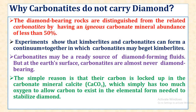Why do carbonatites not carry diamonds? The diamond-bearing rocks are distinguished from the related carbonatites by having a continuous carbonate mineral abundance of less than 50%. Experiments show that kimberlite and carbonatite inactive types can form a continuum together, in which carbonate may migrate into kimberlites. Carbonatites may be a ready source of diamond-forming fluid, but at the Earth's surface carbonatites are almost never diamond-bearing. The simple reason is that their carbon is locked up in the carbonate mineral calcite, which simply has too much oxygen to allow carbon to exist in the elemental form needed to stabilize diamond.